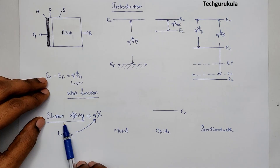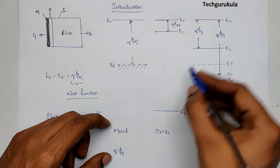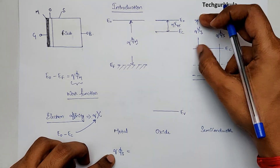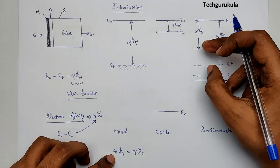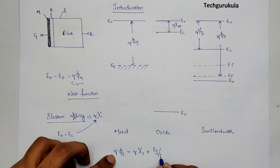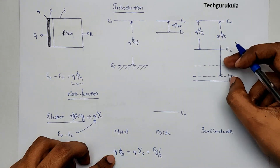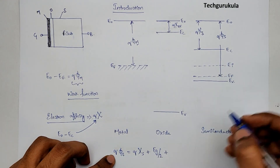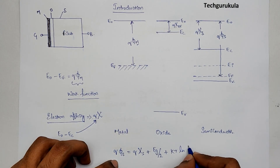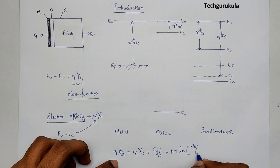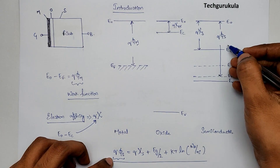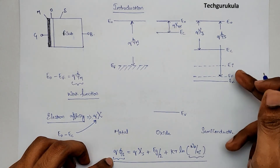The work function of the semiconductor Q×φS equals Q×χS plus (EC to EI), which is EG/2 (half the energy band gap), plus (EI minus EF), which is kT × ln(NA/NI). This means the work function of the semiconductor is dependent on the doping concentration of the semiconductor.